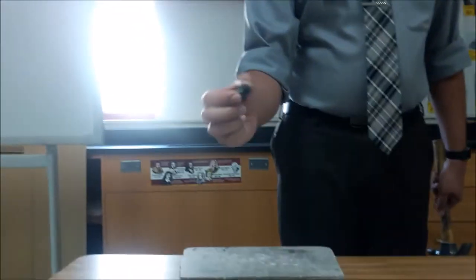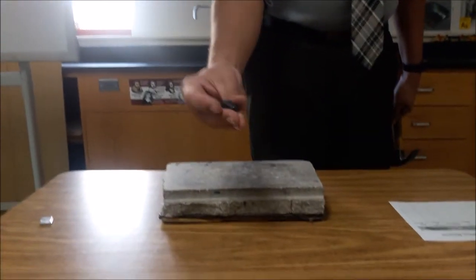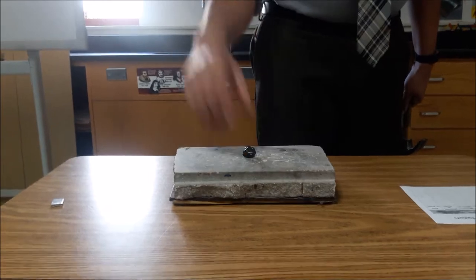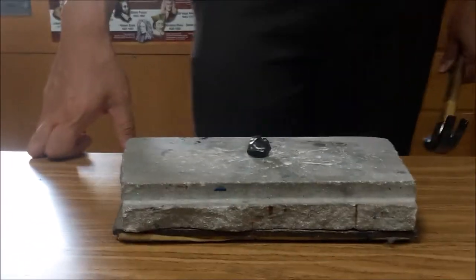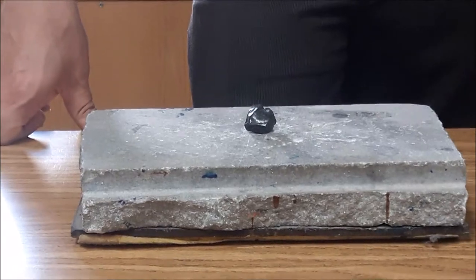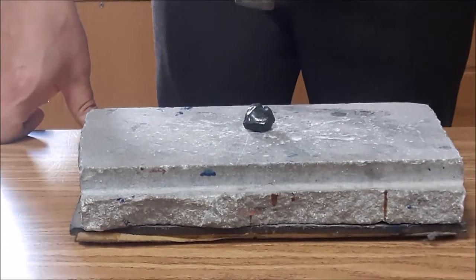The next element we're going to test is carbon. This is a piece of coal. So let's put that here. What do you guys think? Malleable or brittle? Let's find out. One, two, three.